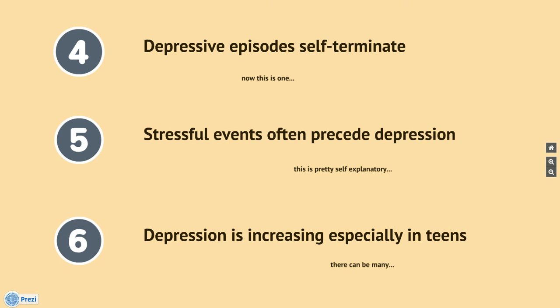Depressive episodes self-terminate is the fourth point. If doctors can figure out how this happens, they can possibly replicate it in other patients to help them. Stressful events often precede depression, since depression usually occurs after something really bad happens that causes emotions to take a turn for the worse. The sixth point is that depression is increasing, especially in teens. There can be many reasons why this is happening, ranging from social to environmental and internal pressures. If the youth as a whole is becoming more depressed, it may mean that society is playing a big role in this.